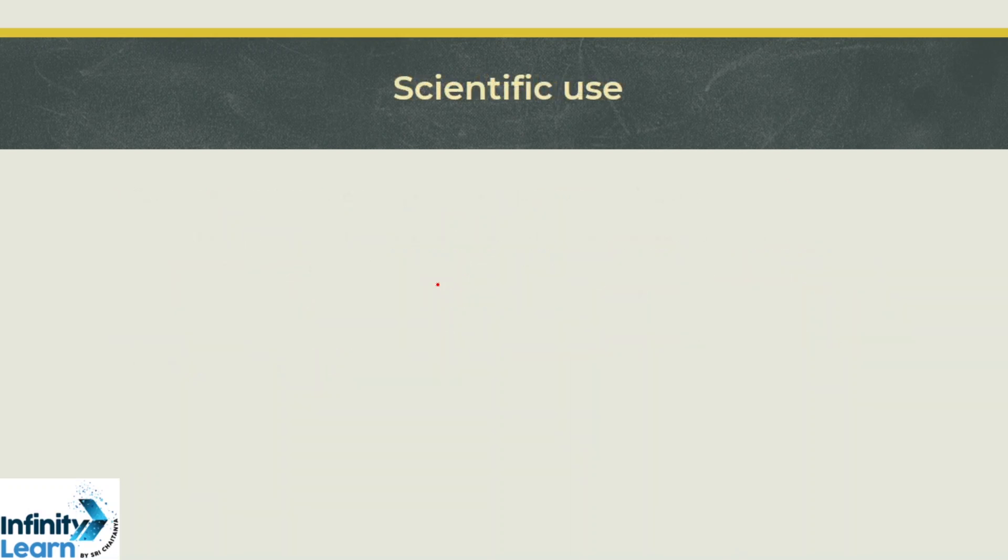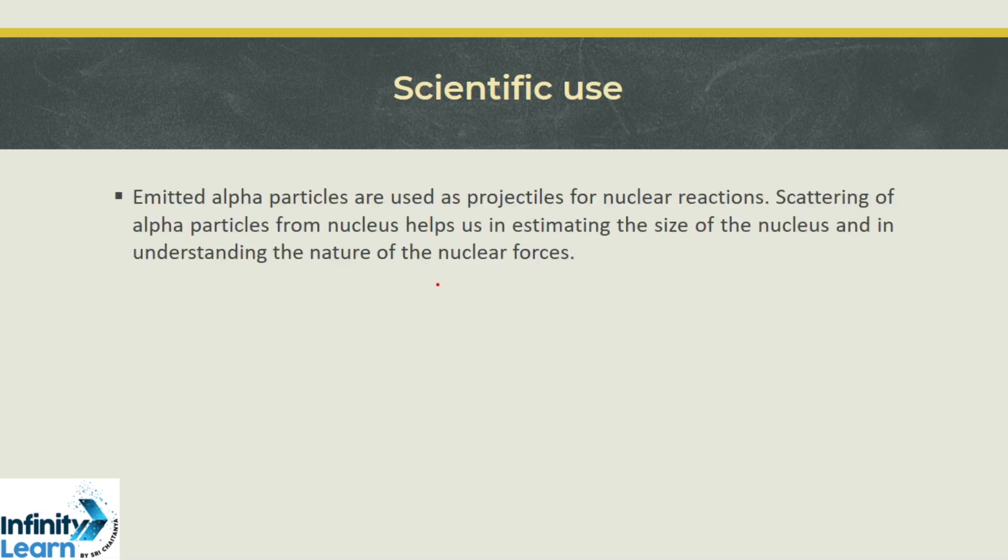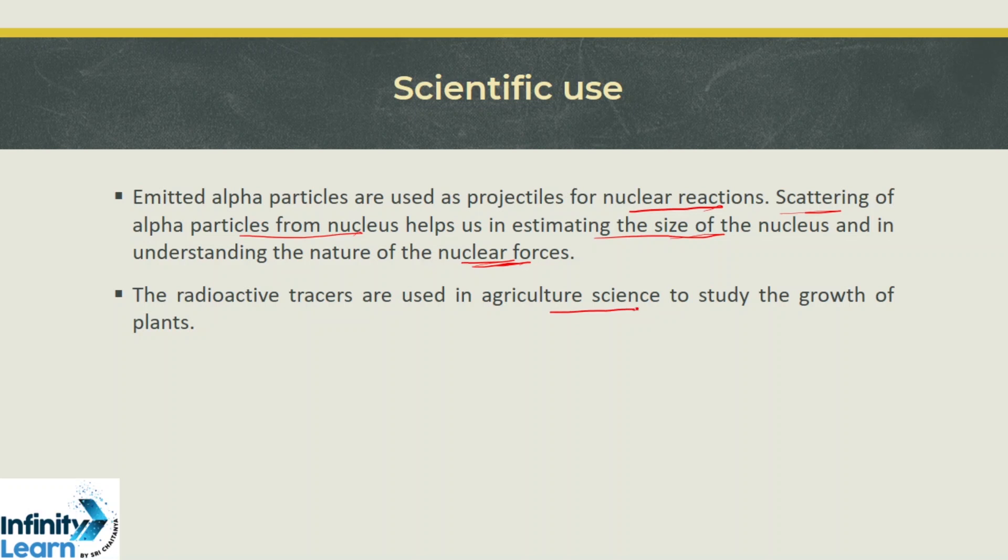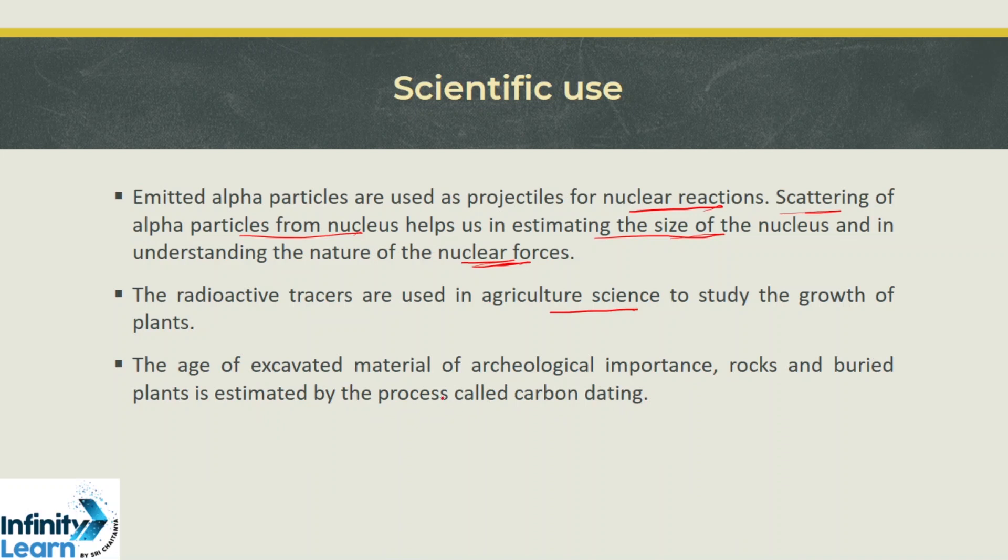In scientific uses, alpha particles are used as projectiles for nuclear reactions. Studying the scattering of alpha particles helps estimate the size of the nucleus and understand nuclear forces. Radioactive tracers are used in agricultural science to study the growth of plants, such as how readily plants take phosphate and which part of the plant it goes to. The age of excavated materials of archaeological importance can be estimated by carbon dating using C-14 isotope.